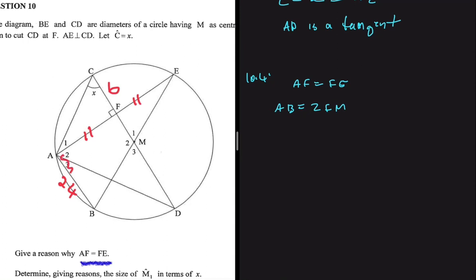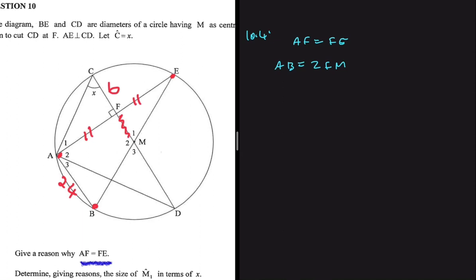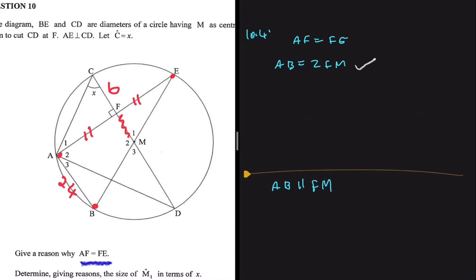We can also say that AB equals 2 times FM. In triangle ABE, line FM cuts the sides proportionally — this means AB is parallel to FM and cuts the two sides into equal lengths. So by proportionality, AB = 2FM. Since AB = 24, we get FM = 12 units.